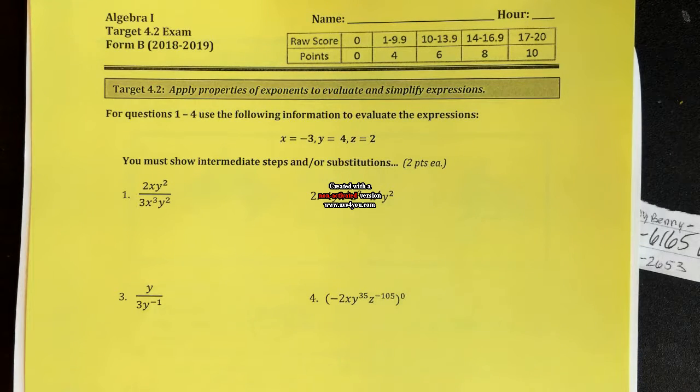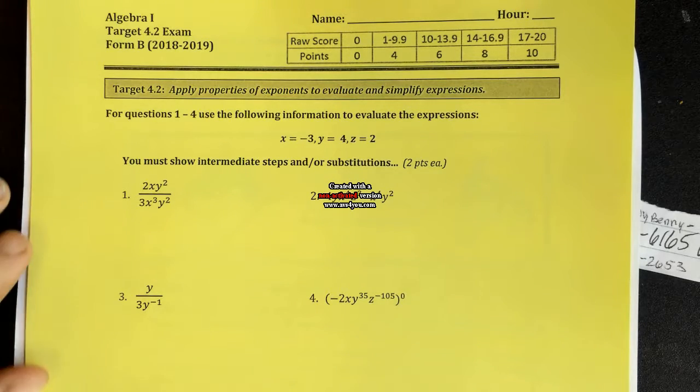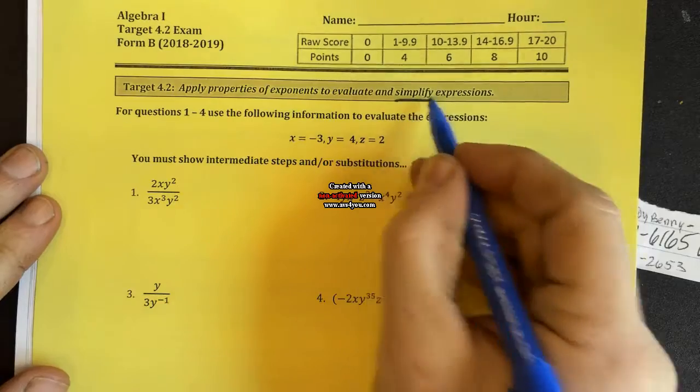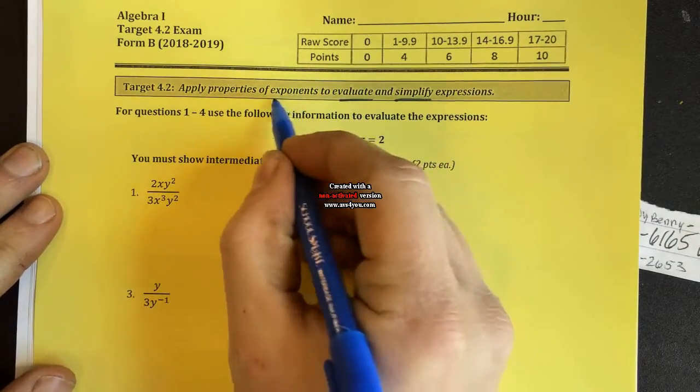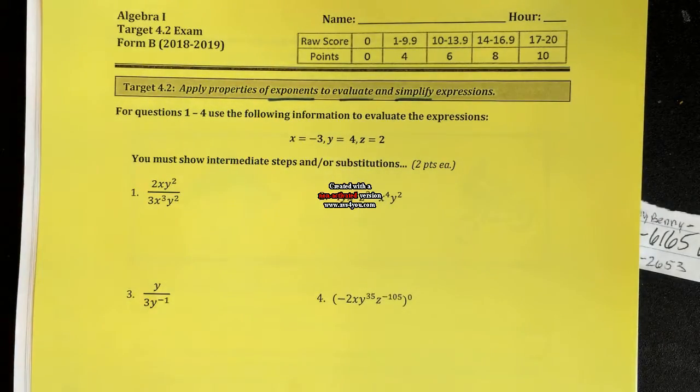Okay, welcome to the review of Algebra 1, Target 4.2, Simplifying with Exponents and Evaluating with Exponents. We're simplifying and evaluating exponents. This is Form B.